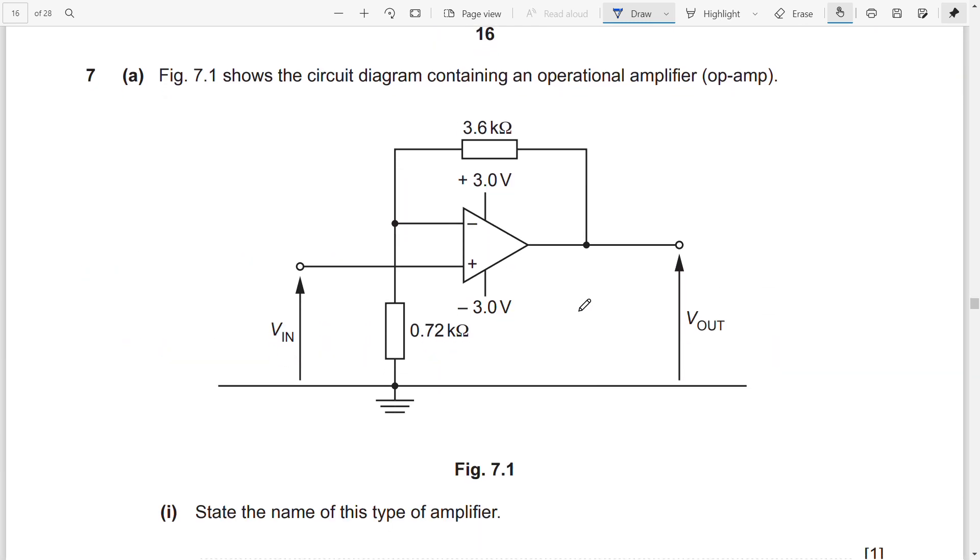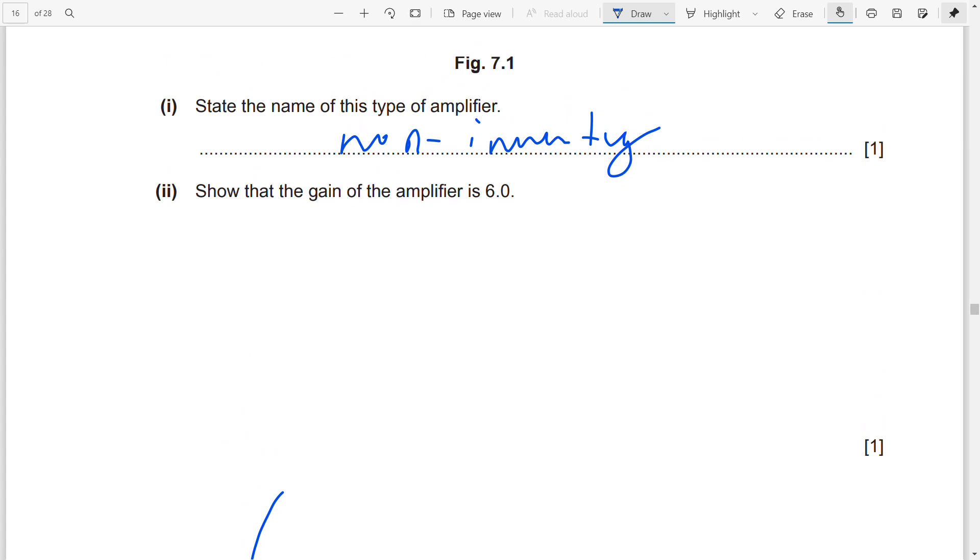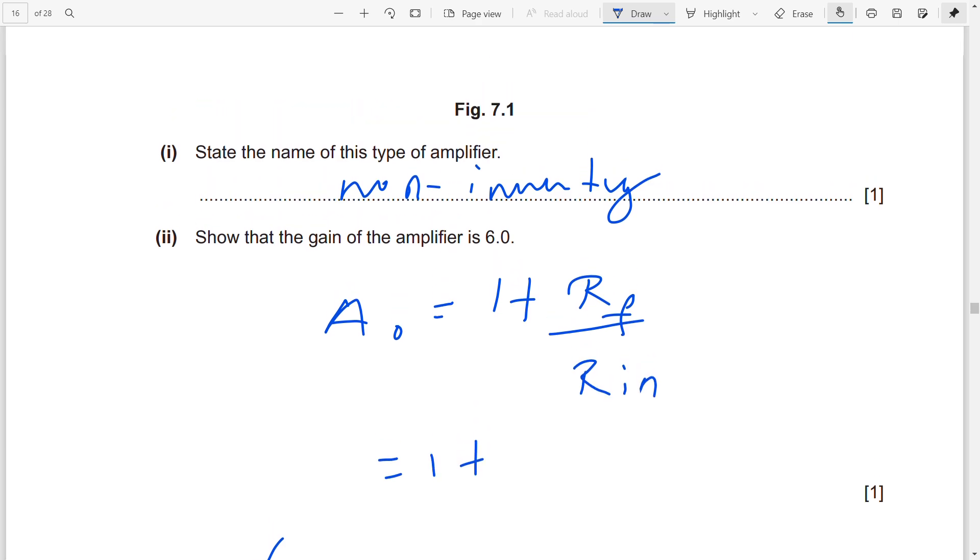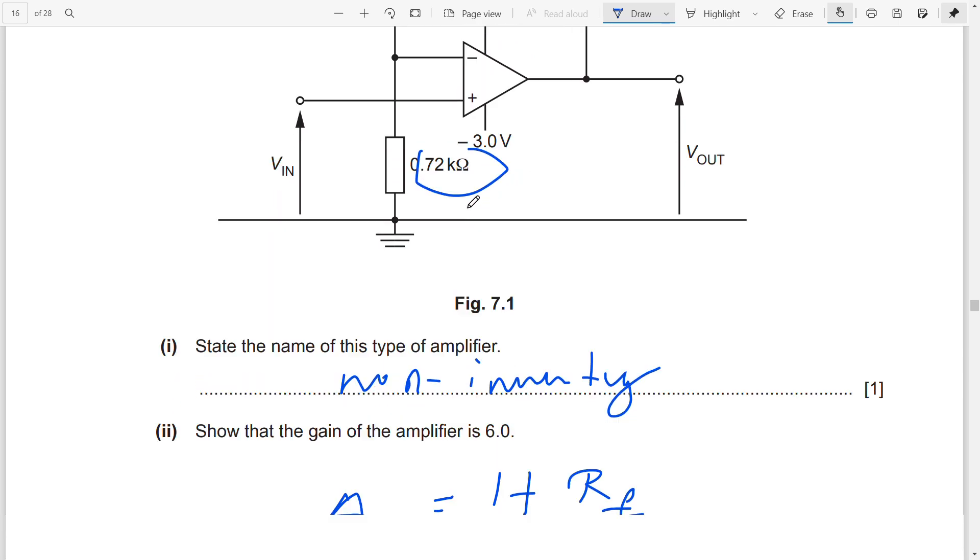This question: this is a non-inverting amplifier. How can you show the gain of the amplifier is 6.0? The formula for gain is 1 + Rf/Rin. So 1 + Rf, which is 3.60, over Rin, which is 0.72. This gives 6.0.